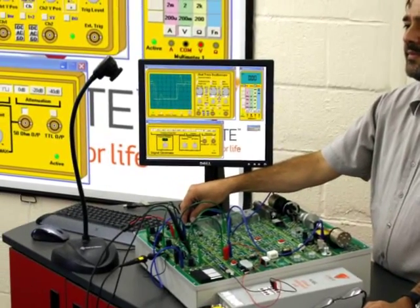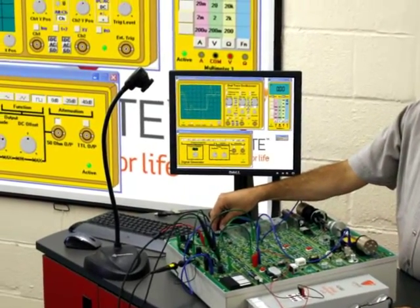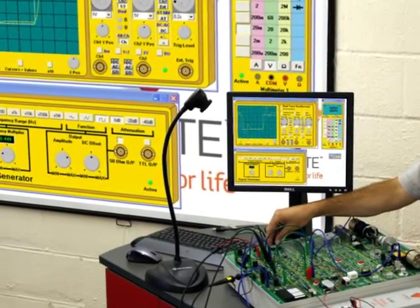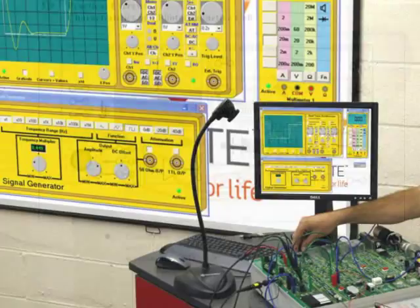As well as students working individually or in small teams, systems on the D1750 trainer can be demonstrated to larger groups using a visualiser and projector.